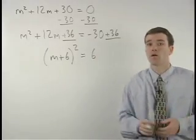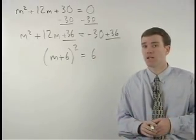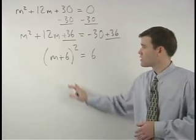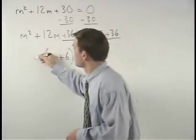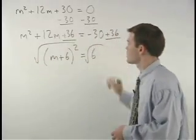And now our problem looks just like one of the examples in the previous section. To solve for m, we get rid of the squared by square rooting both sides.